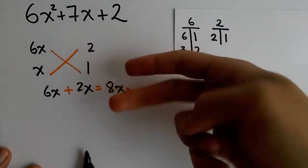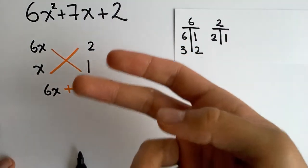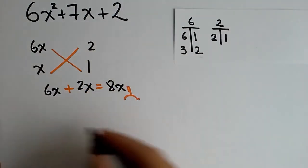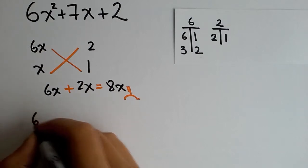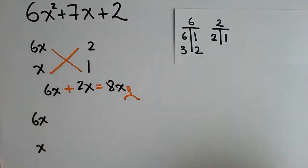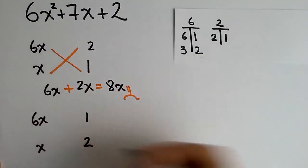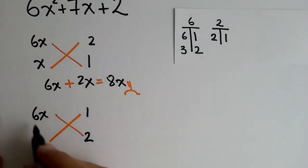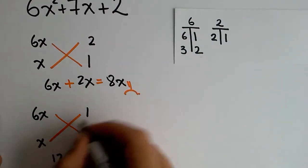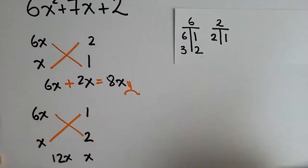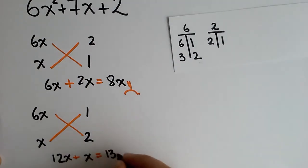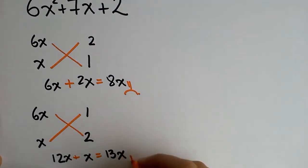Now, flipping around the 2 and the 1 is what I told you that you should do always before changing the pair of factors that you have. So, 6x and x once again. And you switch this one into 1 and 2. You follow your cross. And 6x times 2 gives you 12x. x times 1 gives you x. And then when you add, you obtain 13x. It is not what you're looking for again. So, bad luck. We need to keep on trying.